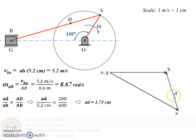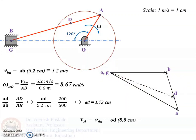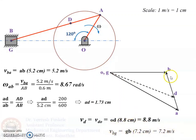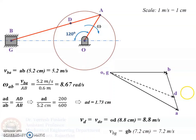Now we join G to D, or O to D, to get the velocity of point D. We measure vector OD — it has been measured as 8.8 cm. According to the scale, the velocity of D is 8.8 meters per second. We can also calculate the velocity of the slider: vector GB is measured as 7.2 cm, so the velocity of B relative to G is 7.2 meters per second. So the angular velocity of AB is 8.67 radians per second and the velocity of point D is 8.8 meters per second. This is how you draw the velocity diagram for the slider crank mechanism.